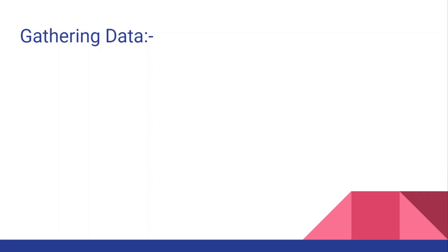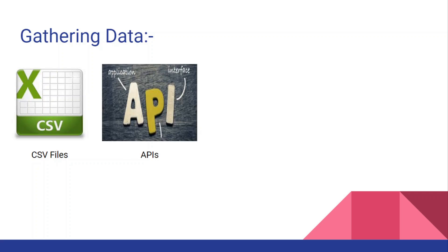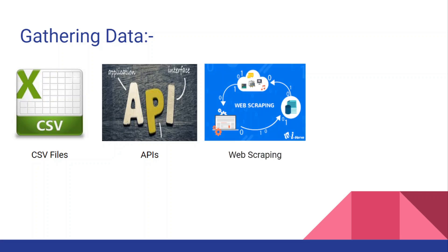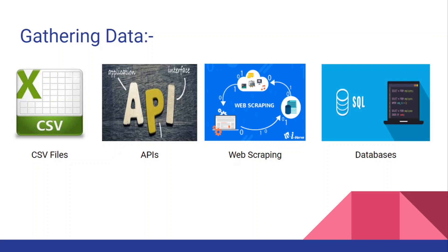Now let's talk about the steps in detail. Gathering data: if you work in a company, you will have four ways to do this. First, you have data in CSV format — you can just bring that file into your system. Or you can fetch data through APIs — you just hit a URL and it returns data. You can also perform web scraping to scrape data from any website. Next is databases — you can run SQL commands to retrieve data from a database.